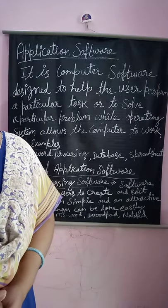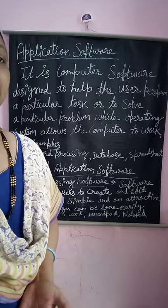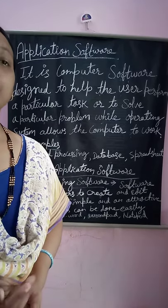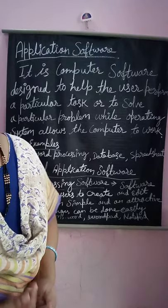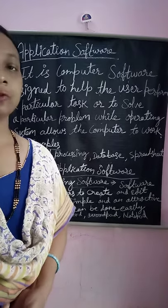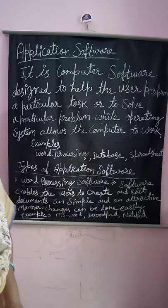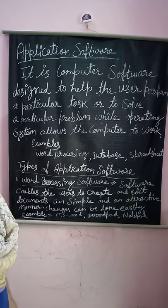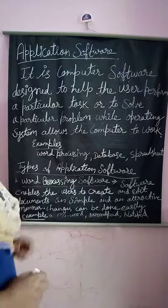If the application software deals with the database, that is a type of database software. So, the type of data the application software deals with determines its type. The first type we will discuss today is word processing software.